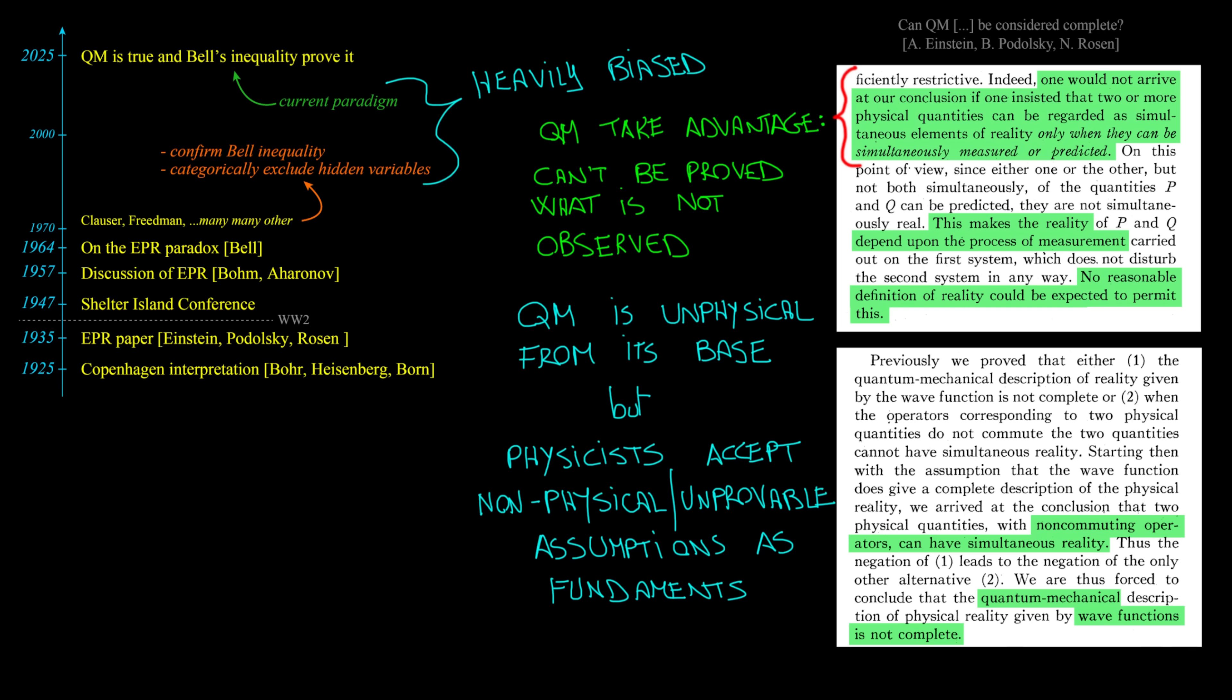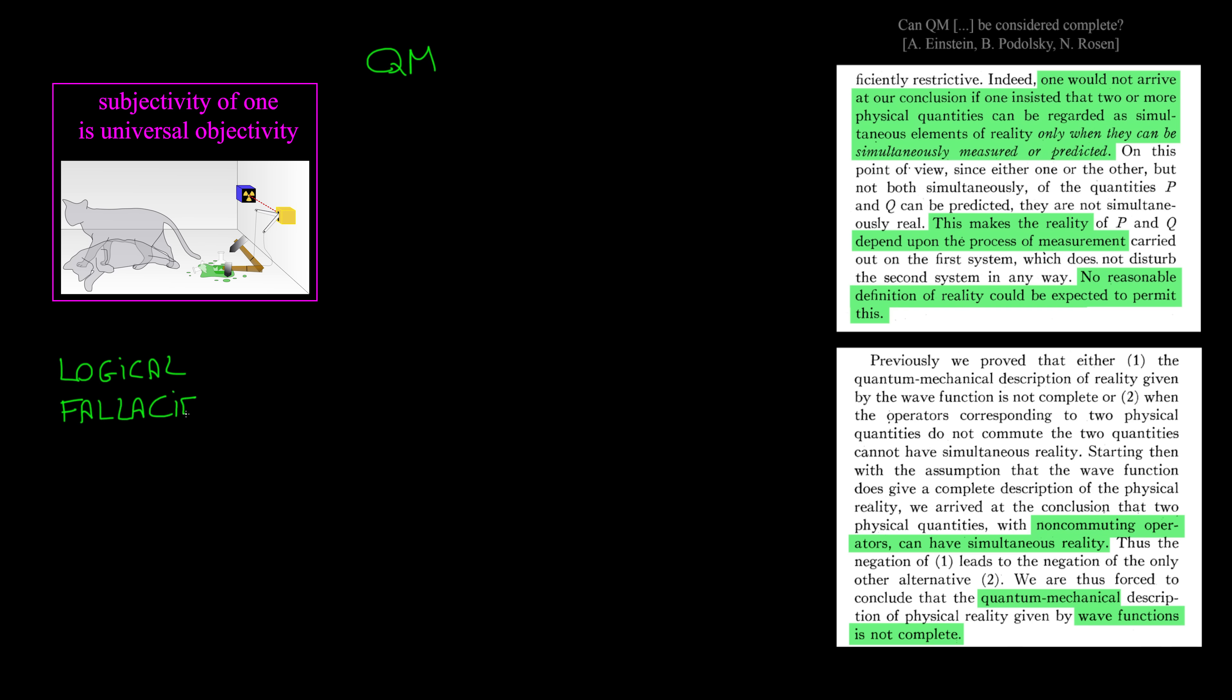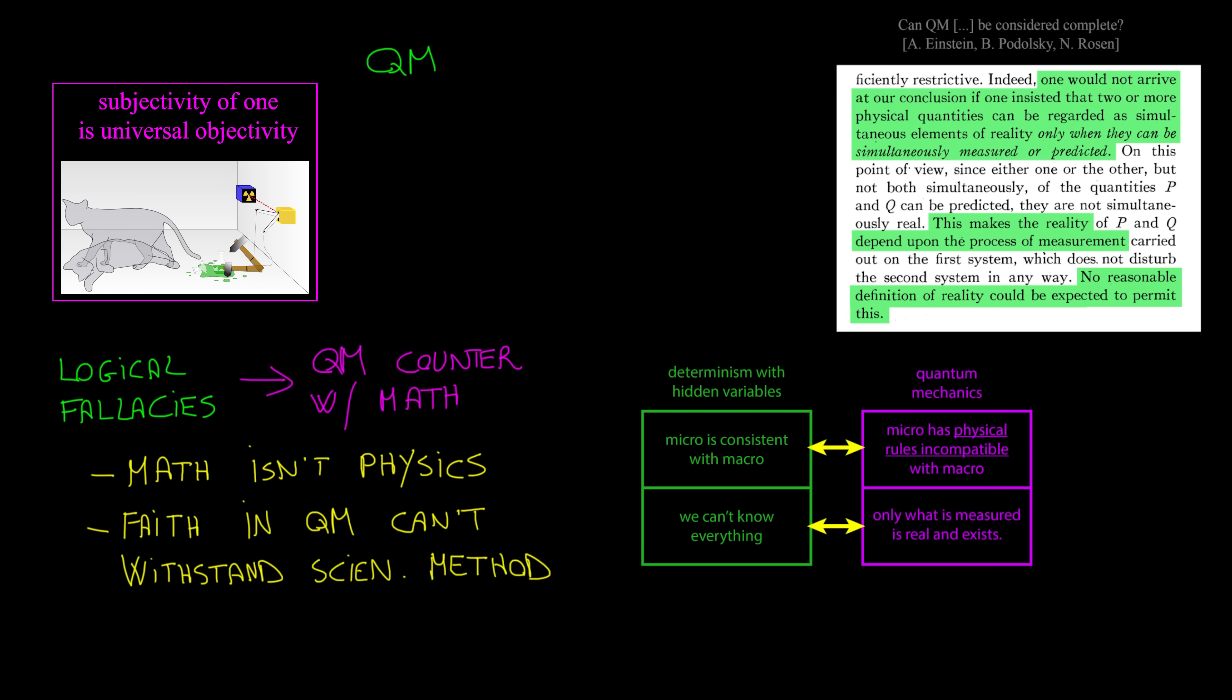It's a recursive theory, invisible and full of arbitrariness, so it's almost impossible to disprove quantum mechanics using its own method and rules. With quantum mechanics, subjectivity of one is universal objectivity, as Schrodinger was trying to show with the cat. Even if logical fallacies are quite evident, quantum mechanics argues back with math. But math is not physics, and the faith in quantum mechanics can't withstand this scientific method. Quantum mechanics cannot be used to understand physics because it needs to violate physical laws in order to work. It is incompatible with the scientific method, and in the end it's just counterfeiting determinism with hidden variables.